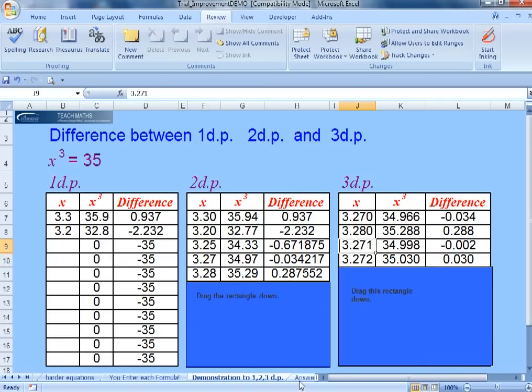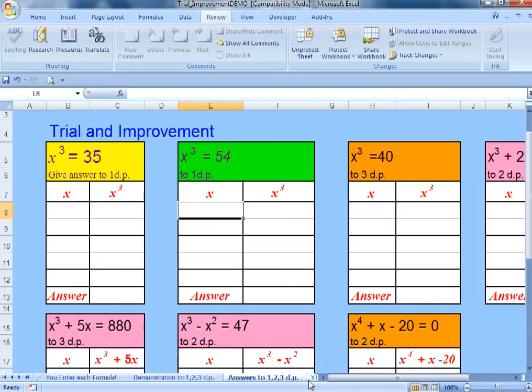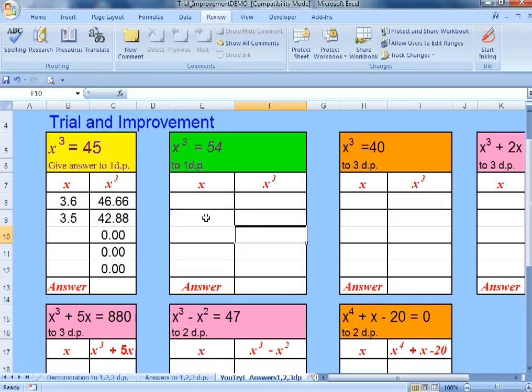So the last two sheets are all about that. One of them you don't enter formulas for so you can only select the things you're meant to edit, the final answer and your trials, but in this sheet you can edit everything because you're going to have to experiment.